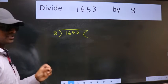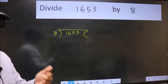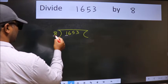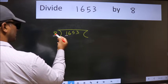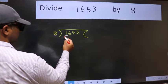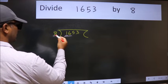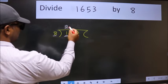This is step 1. Here we have 1 and here 8. 1 is smaller than 8, so we should take two numbers, 16. When do we get 16 in the 8 table? 8 times 2 is 16.